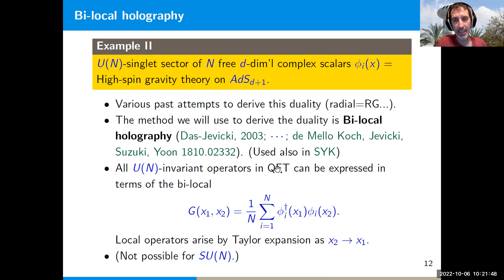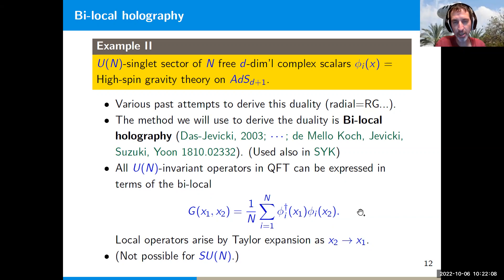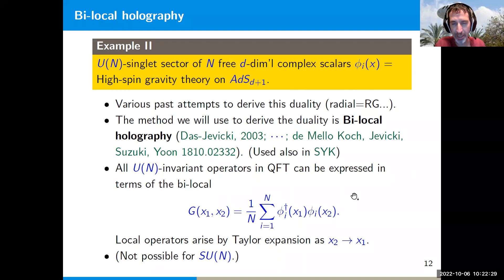The basic idea of bi-local holography is that in this quantum field theory, all U(N)-invariant operators can be expressed in terms of a bi-local operator G(x₁, x₂) = Σᵢ φᵢ†(x₁)φᵢ(x₂), which is manifestly U(N)-invariant. One can show that all U(N)-invariant operators can be expressed as products of these G's. Obviously you can get the local operators by Taylor-expanding this bi-local as x₂ → x₁, giving all those spin-j local operators. The bi-local contains more information than just the Taylor expansion.